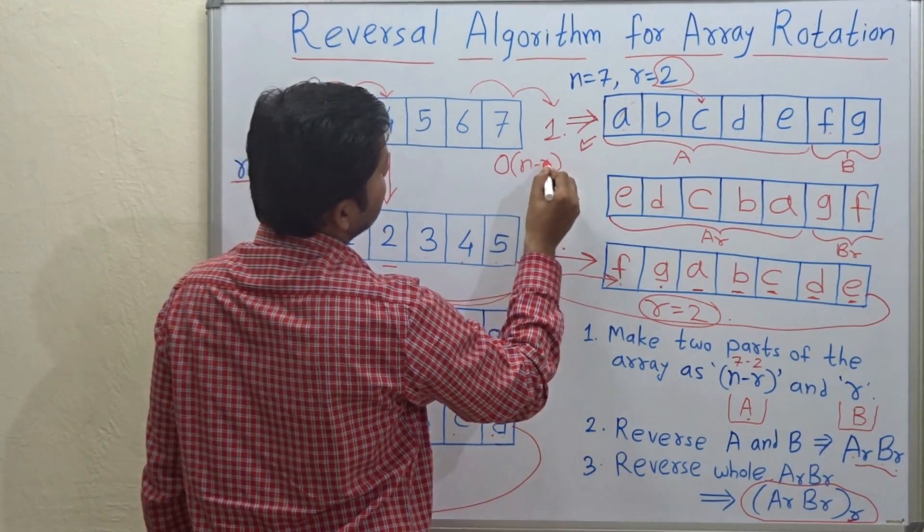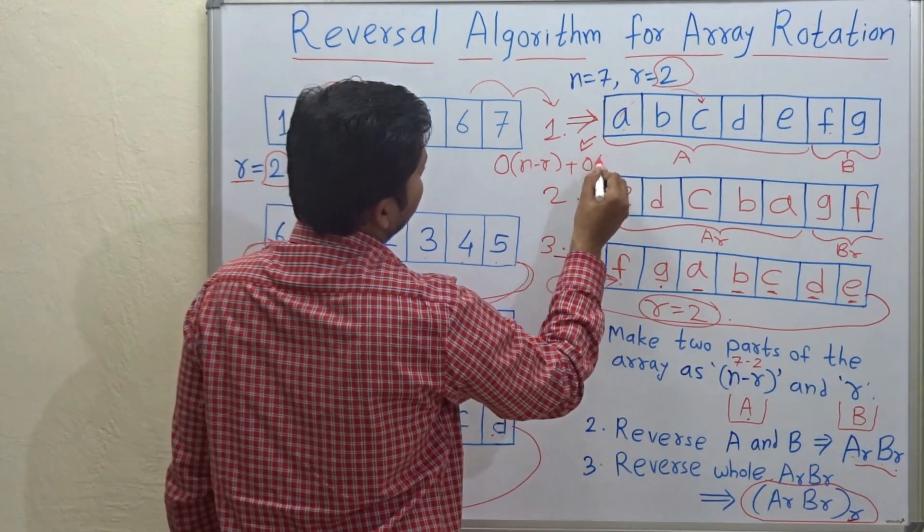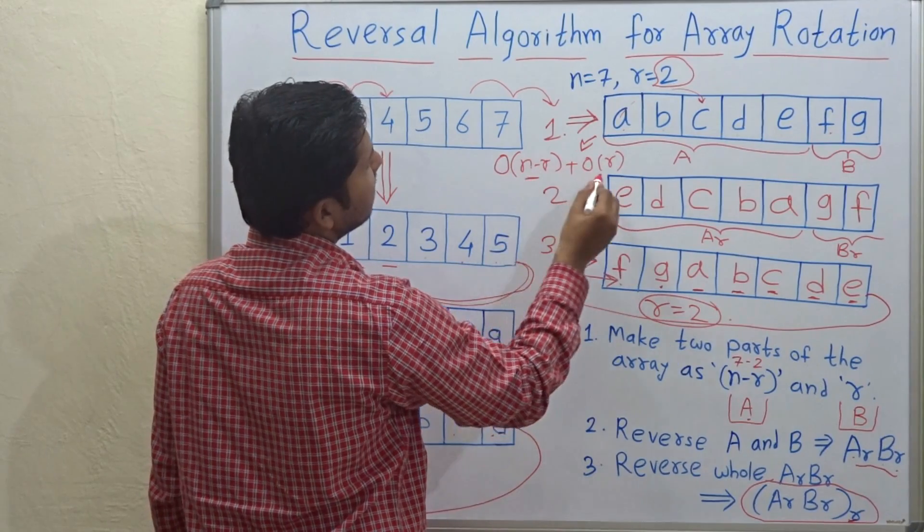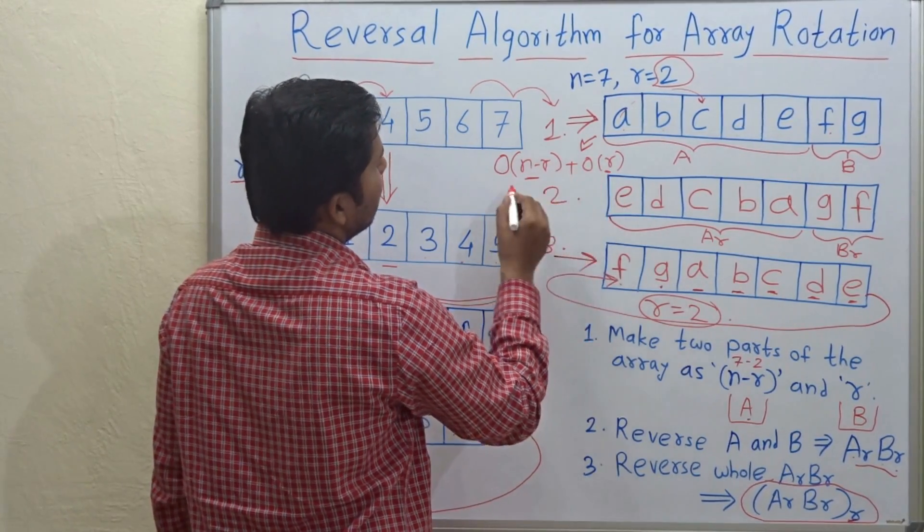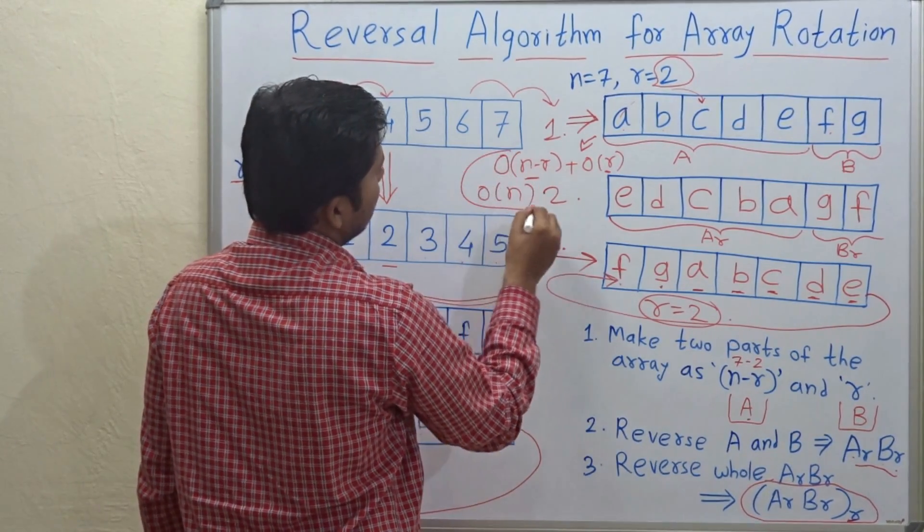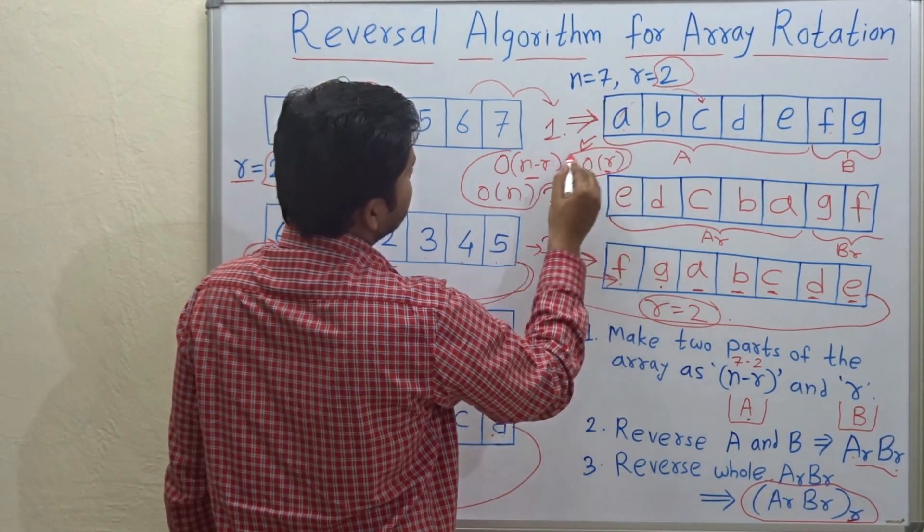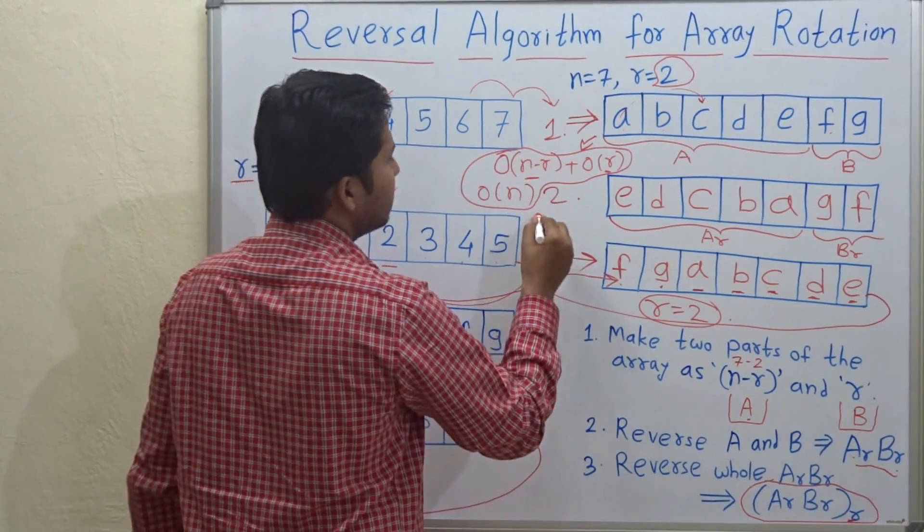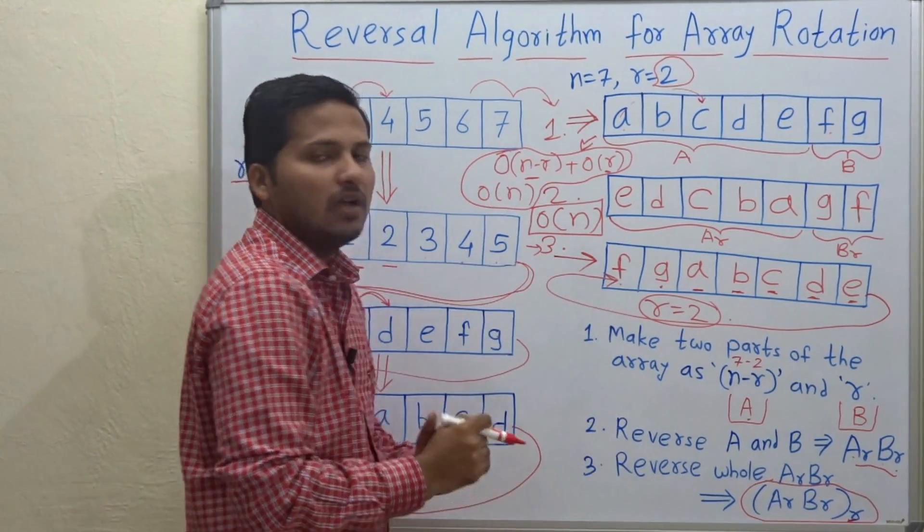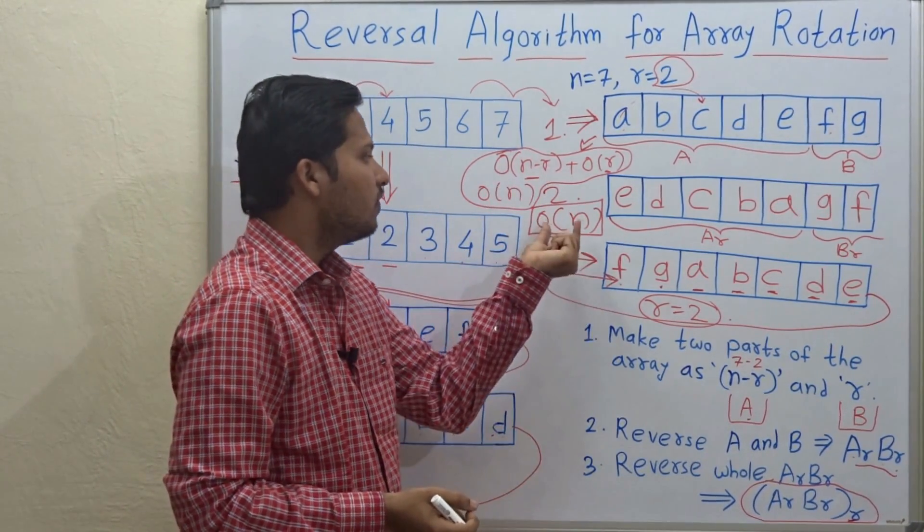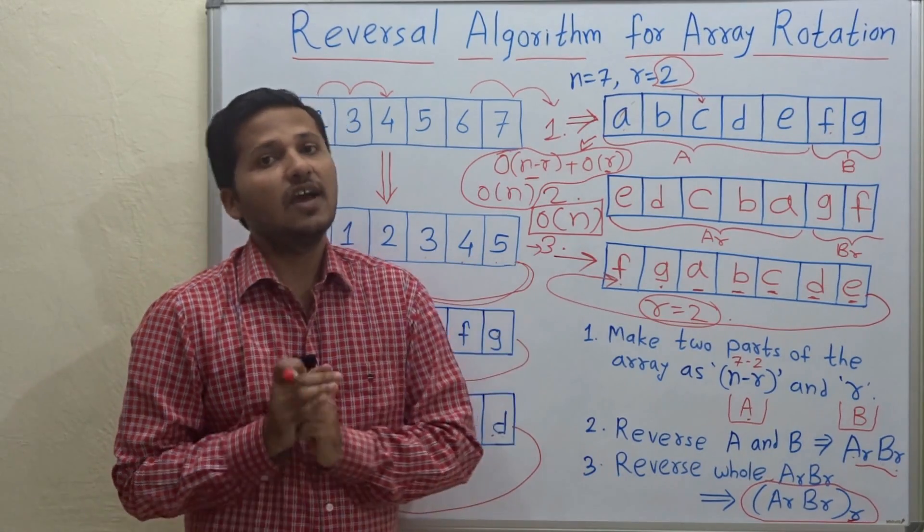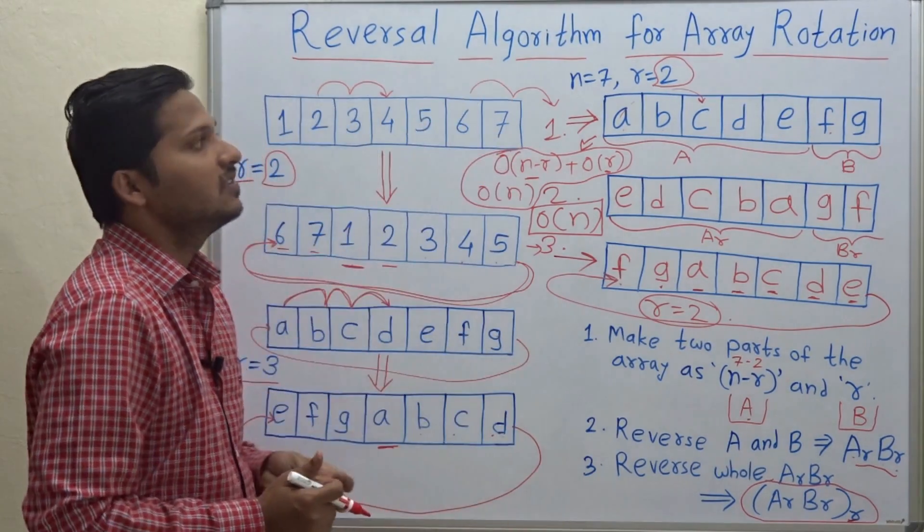And the time complexity is see for reversing an array it is O of N minus R plus O of R. So O of N minus R for the first part and O of R for the second part and O of N for the third step. So all these time complexities can be said as the O of N time complexity. So this is an efficient algorithm for rotating the array.